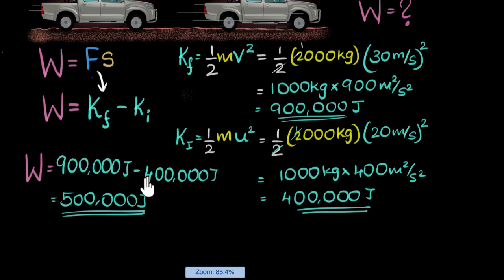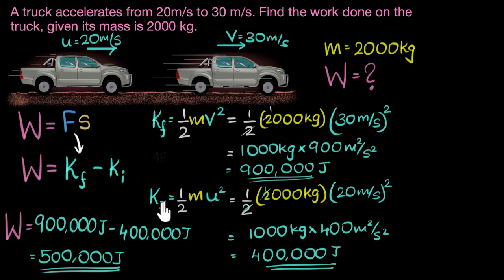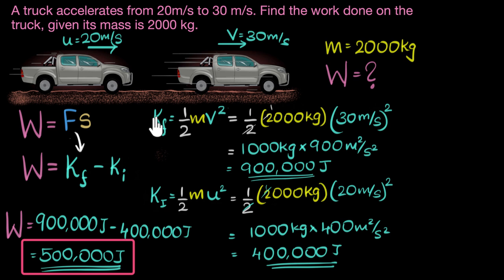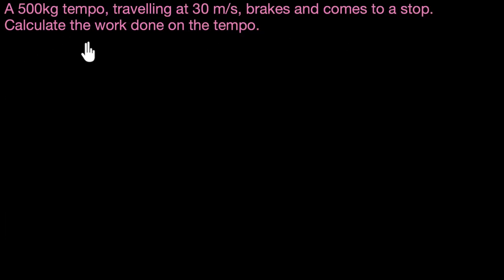The truck gained 500,000 joules of kinetic energy, and so that must be the work done on the truck. When velocities are given, we can directly use the work-energy theorem to calculate the work done. Let's try one more — a pretty similar problem, so pause and see if you can try it yourself first.